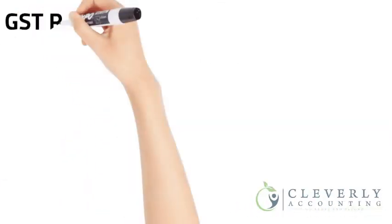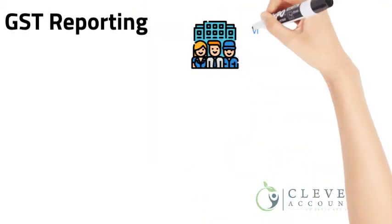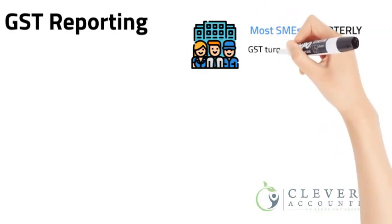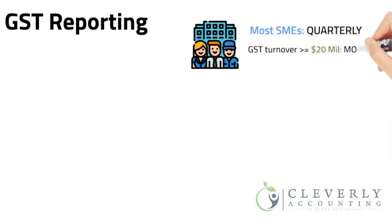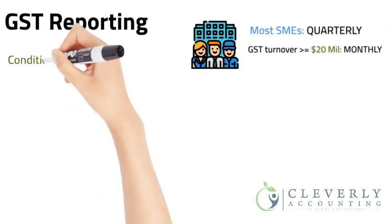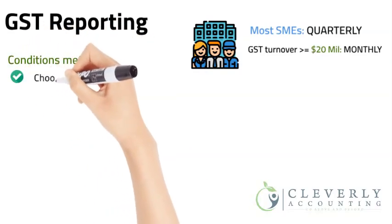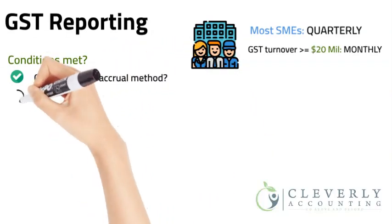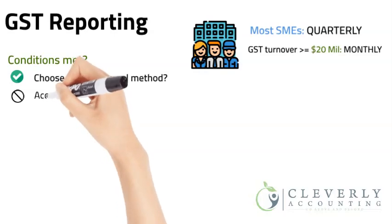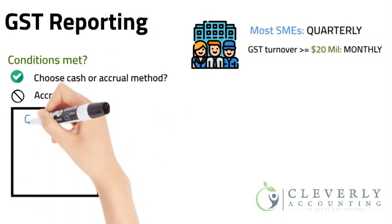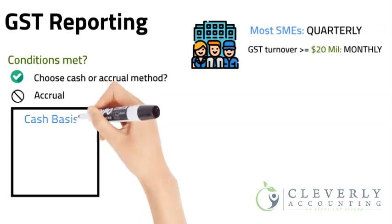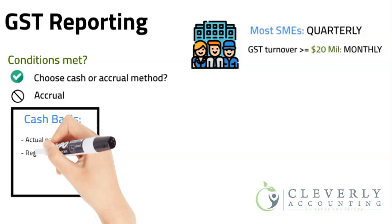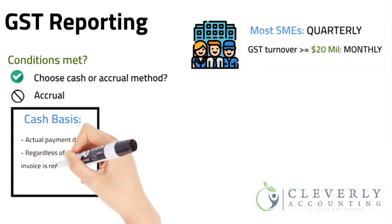GST reporting: most SMEs report GST quarterly. A monthly tax period is only applicable to entities with a GST turnover of at least $20 million. An SBE entity that meets certain conditions can choose to use either the cash basis or accruals methods of accounting for GST. All other entities must account for GST using the accrual basis. Under the cash basis, the taxpayer only accounts for GST on actual cash payments received and made during that period, regardless of when the goods or services are provided or an invoice is received.